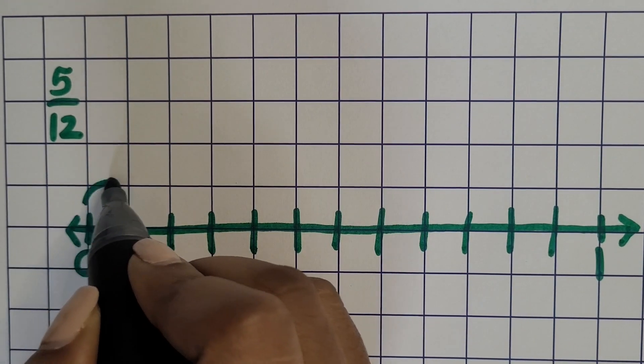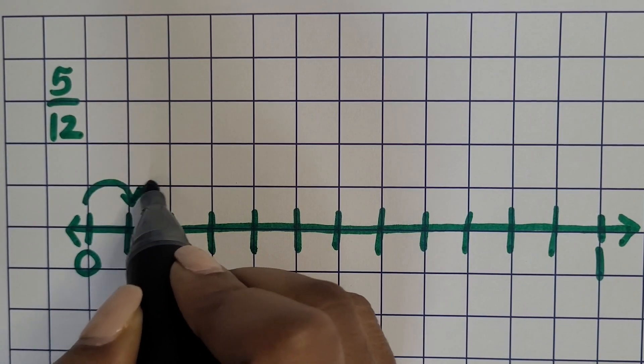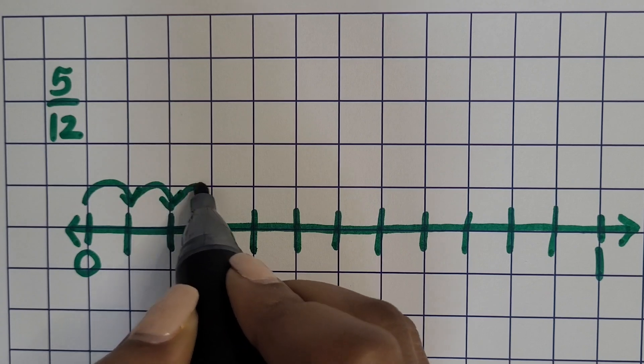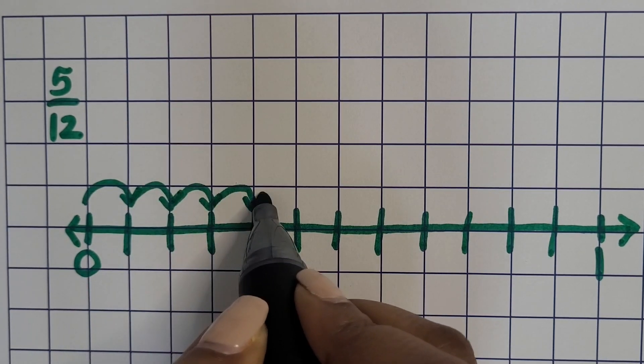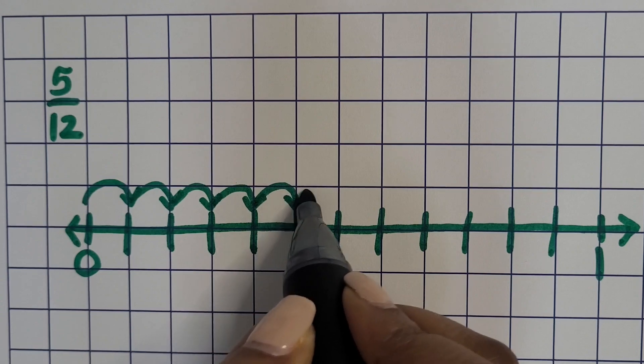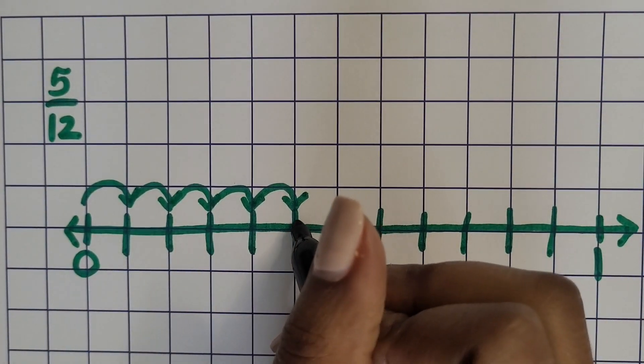And now we need to identify where five-twelfths is, so we're going to start at zero and then draw an arrow to represent a jump. Each jump is one-twelfth, so we want to go all the way to five-twelfths and then label that.